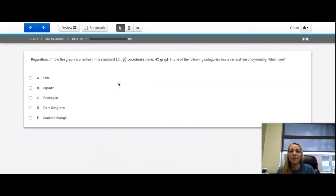Question number 40. Regardless of how the graph is oriented in the standard XY coordinate plane, no graph in one of the following categories has a vertical line of symmetry. Which one? So in this case, we're trying to find something that can fold onto itself evenly on both sides. And so we're trying to look for which graph will not have any of that symmetry. And if I look here at my choices and knowing what I know about a scalene triangle, a scalene triangle has three lengths that are not equivalent. That will never have a line of symmetry that allows the graph to fold onto itself perfectly. All of these other ones do. If we wanted to see the lines of symmetry for all of these, how they can fall onto them,